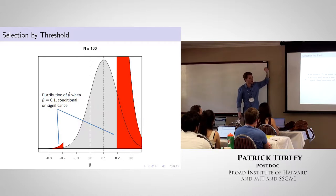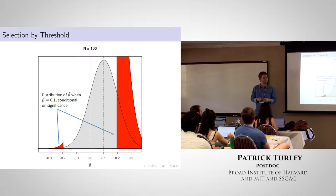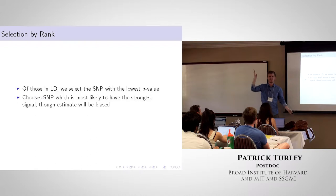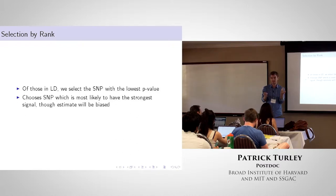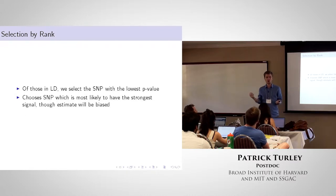The second issue is that when we find a region with maybe 12 SNPs all genome-wide significant and highly correlated due to LD, we don't believe they all represent different signals. We want to pick one representative SNP for the locus. The question is: which one do we pick?